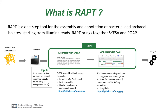The inputs to RAPT are short reads from Illumina machines — high-accuracy genomic reads from a single isolate. No metagenomic data at the moment. RAPT will produce an annotated assembly in a variety of formats. It will also verify the organism name that was provided with the reads on input.